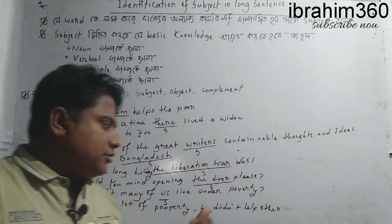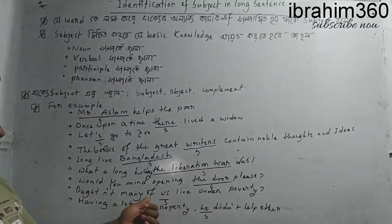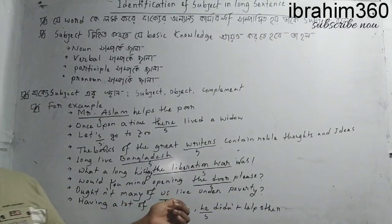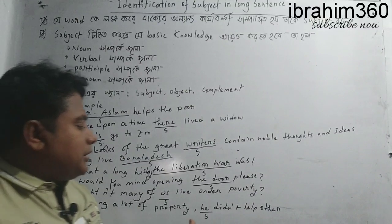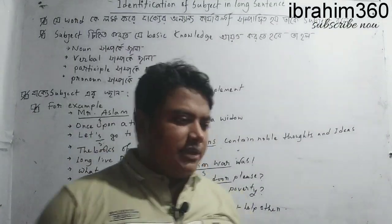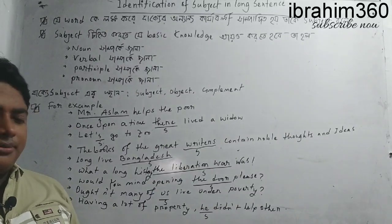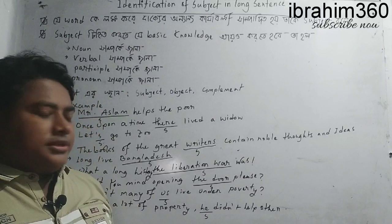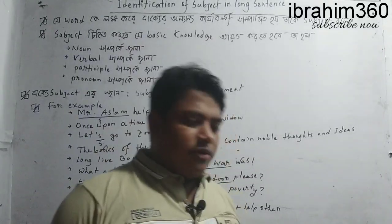That is the subject. For example: 'Not many of us live under poverty' — here 'us' is the subject. Finally, 'Having a lot of property, he did not help others' — here 'he' is regarded as the subject, because in simple sentences and complex sentences, sometimes the subject appears in a later part of the clause.